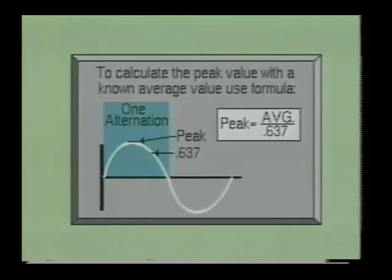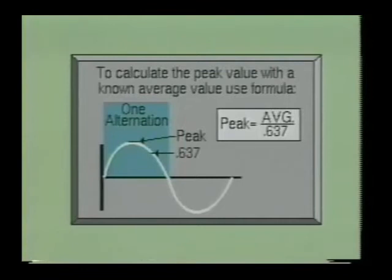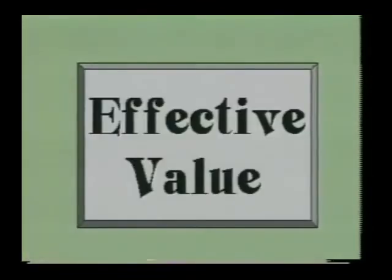If you know the average value of a sine wave and you need to know the peak value, then you would divide 0.637 into the average voltage value. The average value of the AC wave is seldom used in the technician's line of work. Most of the time, voltage and current are specified in their effective value.